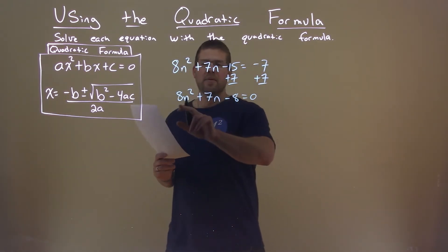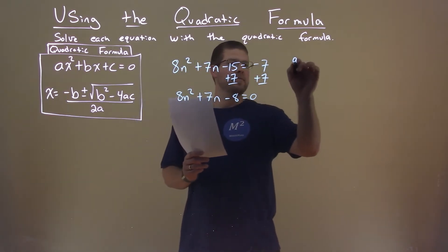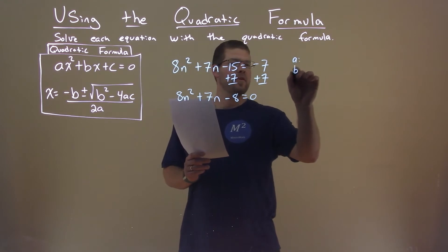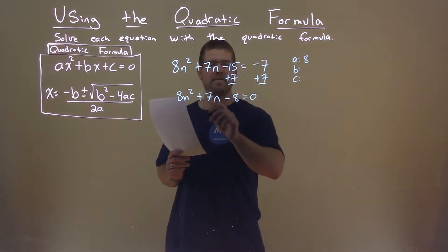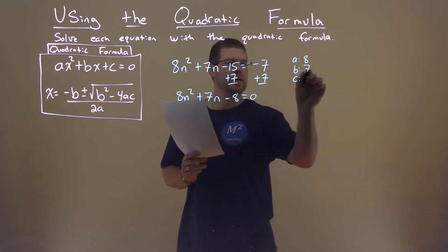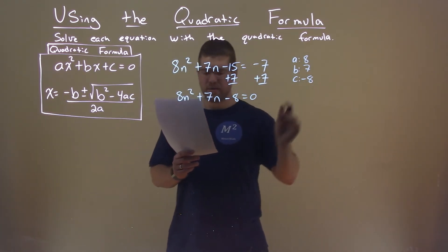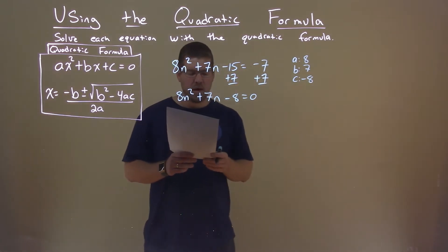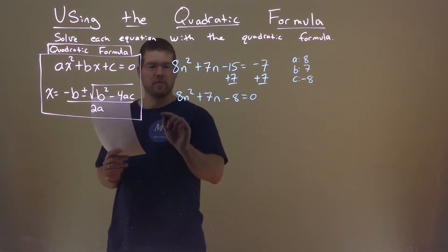Now we need our a, b, and c values. So let's go find that. The a value is 8, b value is 7, and c value is negative 8. And now we're going to use that with the quadratic formula.